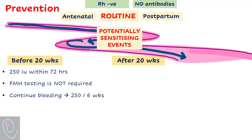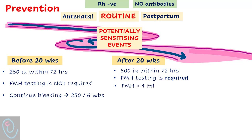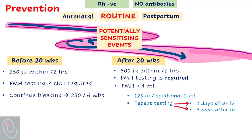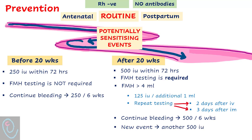After 20 weeks, administer 500 international units within 72 hours of the event, and test for fetomaternal hemorrhage. Provide additional doses of Anti-D if fetomaternal hemorrhage is more than 4 ml — the dose for every additional 1 ml is 125 international units. Repeat testing two days after intravenous Anti-D or three days after intramuscular Anti-D. If there is continuous bleeding, administer another dose of 500 international units every six weeks. If there is a new event, give another 500 international units.